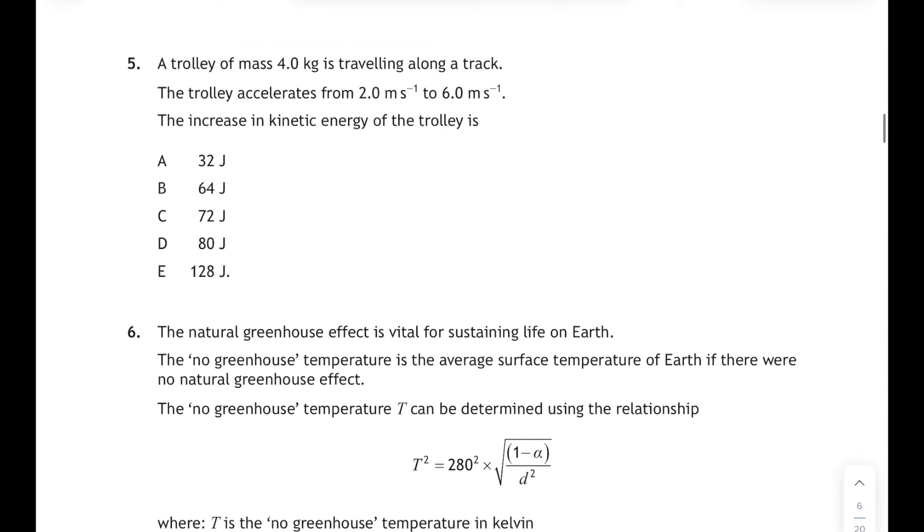Question five: a trolley of mass four kilograms is traveling along a track and accelerates from two meters per second to six meters per second, and we've defined the increase in the kinetic energy of the trolley. Well, we're going to need our kinetic energy relationship here: Ek equals a half mv squared. And we're going to work out its initial kinetic energy using the initial velocity. The initial velocity was two meters per second, that gives us an initial kinetic energy of eight joules. And then do the same thing again using a half mv squared, but using the final velocity. So half the mass times six squared gives us 72 joules. So the kinetic energy has increased by 64 joules, and that corresponds to answer B.